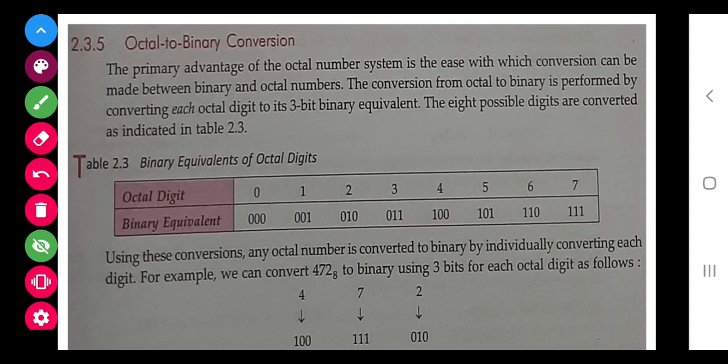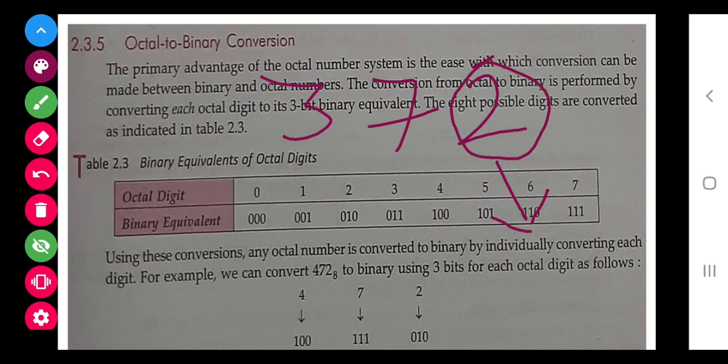Octal to binary. I have an octal number, suppose the same 372. Now we have to consider this as a decimal number and convert into binary. If we convert into binary, it will come as 10, as shown here in this table. Now 7 is 111.